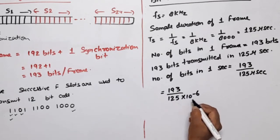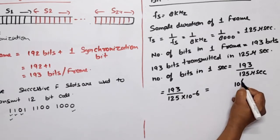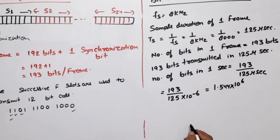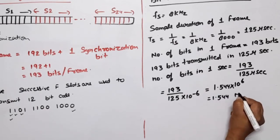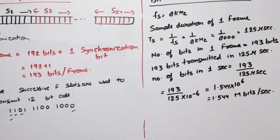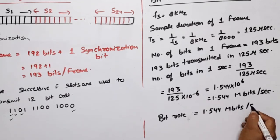Bits per second, or the number of bits in 1 second, equals 193 divided by 125 microseconds, which is 125 times 10 to the power minus 6. When we calculate, 10 to the power minus 6 becomes 10 to the power 6. When we solve it, this value equals 1.544 into 10 to the power 6, or 1.544 megabits per second. So the bit rate is 1.544 megabits per second.